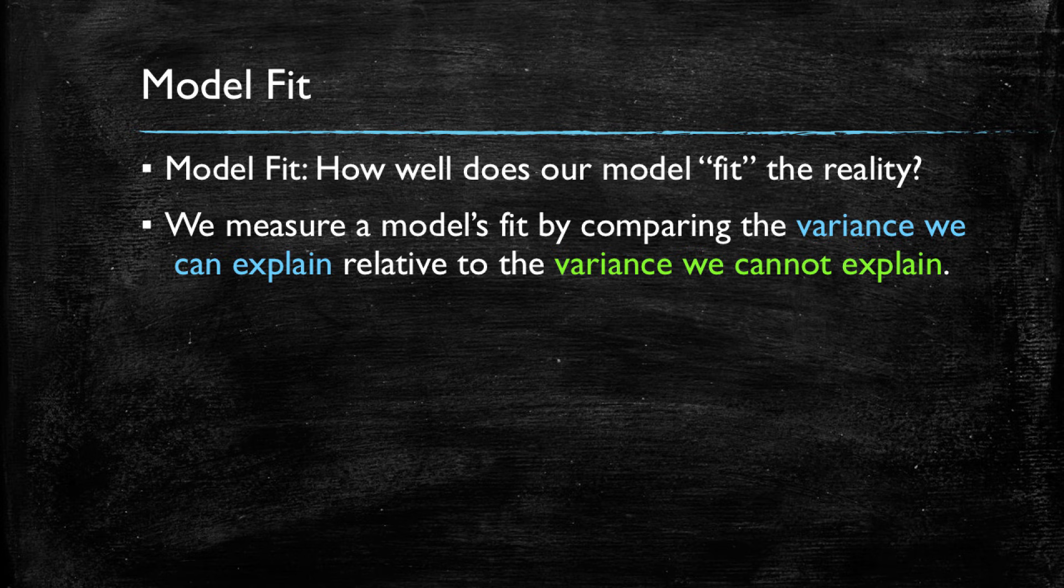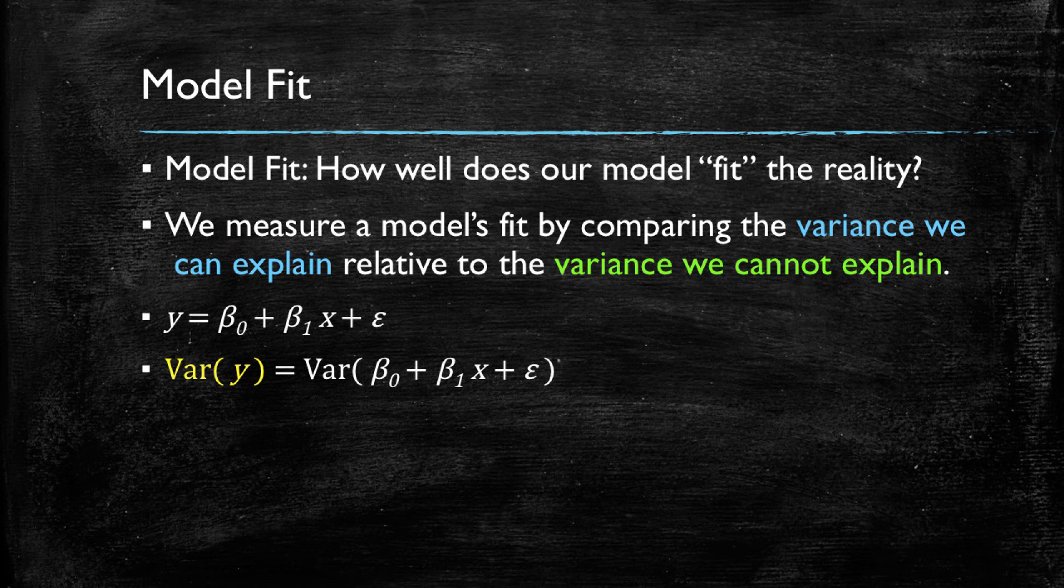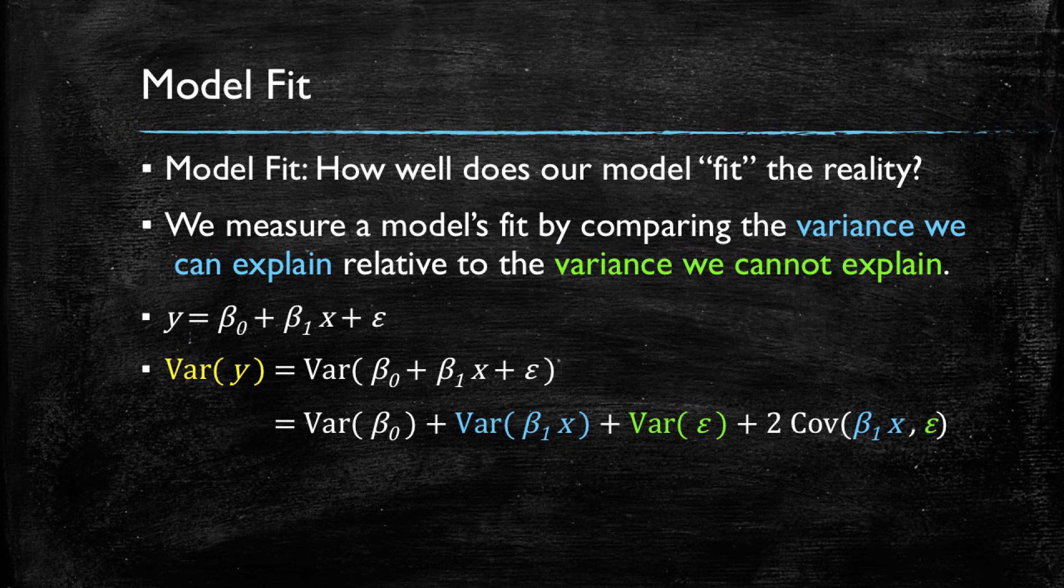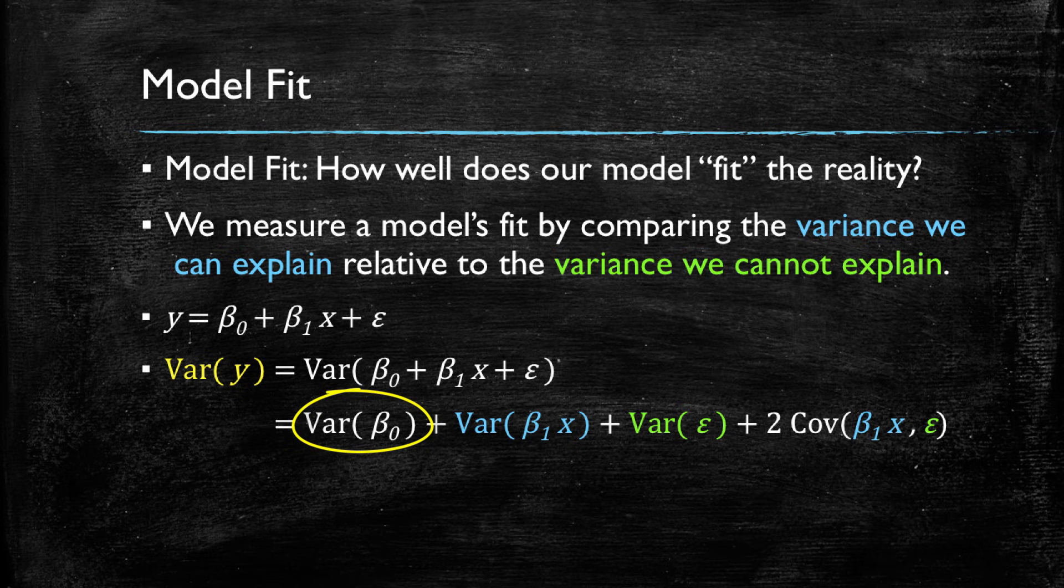And for this it is useful to do a little algebra. Remember that this is our model and we want to evaluate the variance in Y. So we can compute the variance of the entire expression and open up what we have on the right-hand side. Let's take it slowly. The first term is the variance of the intercept, which is a constant. By definition, a constant stays equal regardless of the observations. So the variance is going to be zero and we can take this term out.